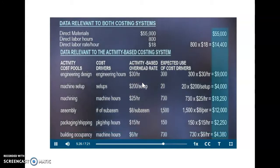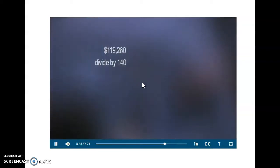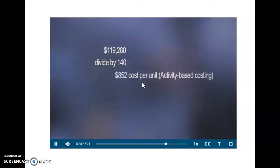Adding everything, the total costs assigned to the order are $119,280. Divide that by the number of ellipticals, again 140, to get a cost per unit of $852.